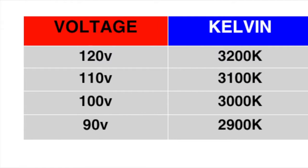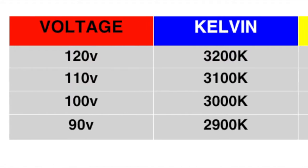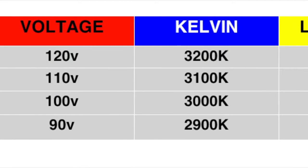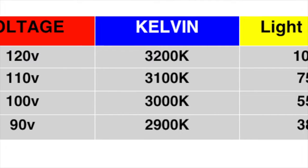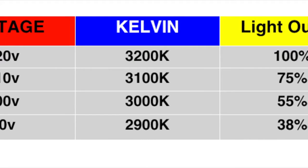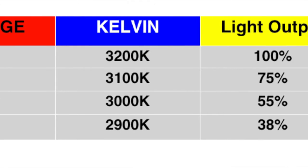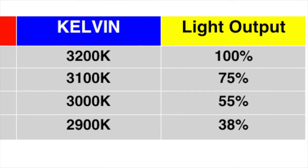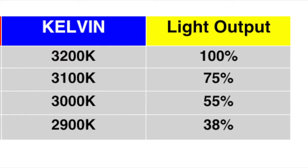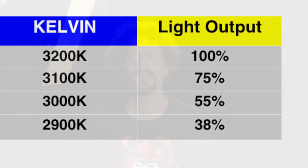It is important to note that while color correction gel or dimming will give the tungsten fixture a correct or desired color temp, it takes away from the output of the light, making it less bright.